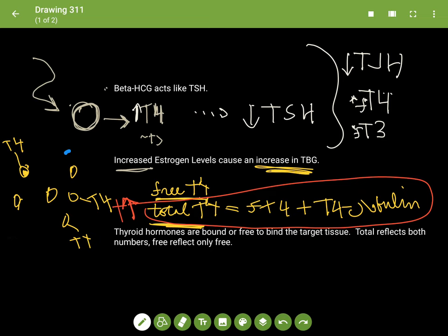So when you treat someone, now you have a pregnant patient and they have a slight increase in free T4 and a great increase in the amount of thyroid binding globulins. So you're going to have not very much thyroid hormone that's free to bind the target tissue.